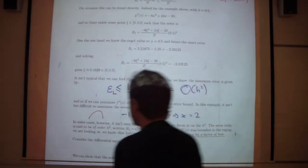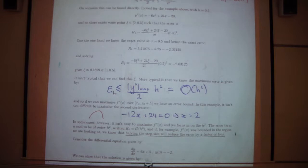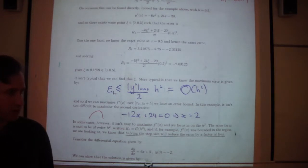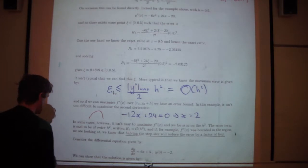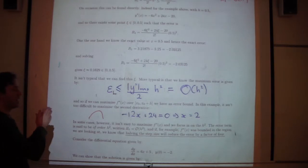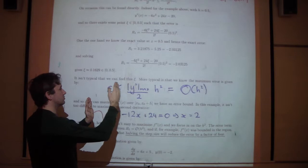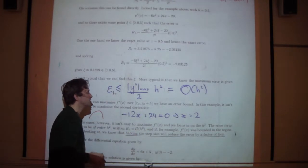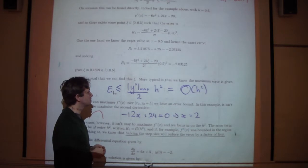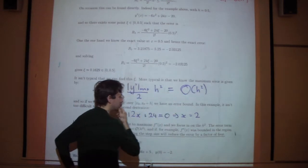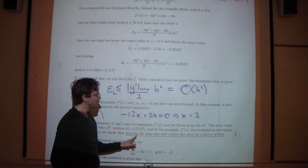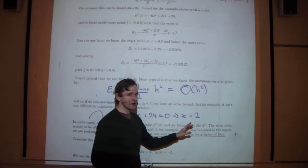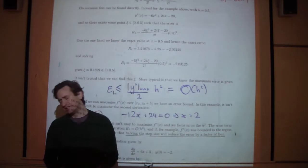We're back after a costume change. There's a lot of detail on this page that's not too important. What it boils down to is that when you use the tangent to approximate a function and you go from x₀ to x₀ plus h, the big story is that the error in that approximation is of order h squared. Halving the step size reduces the error by a factor of four.